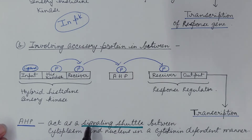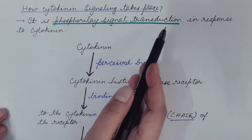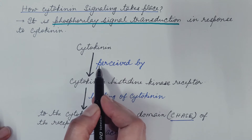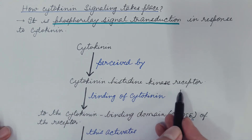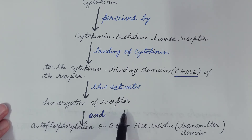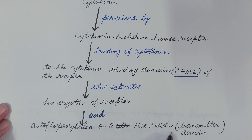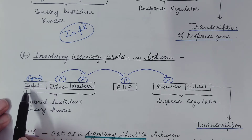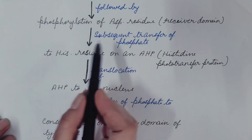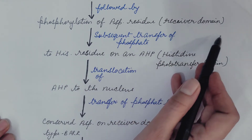Let us discuss it in detail in Arabidopsis plant. Cytokinin signaling is a phosphorylase signal transduction in response to cytokinin. Cytokinin is perceived by the cytokinin histidine kinase receptor through binding to the cytokinin-binding domain, known as the CHASE domain of the receptor. This binding activates dimerization of the receptor and also leads to autophosphorylation on a histidine residue present in the transmitter domain — the phosphate group is provided by ATP. So the ligand comes and binds with the receptor, which leads to autophosphorylation of the histidine residue in the transmitter domain.